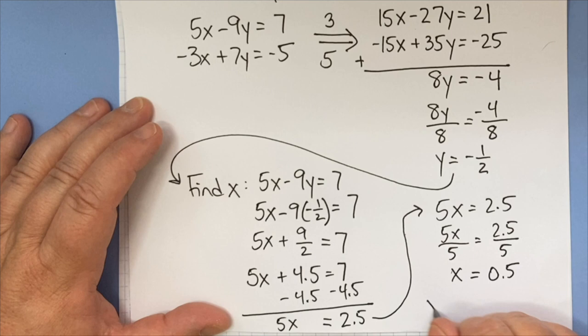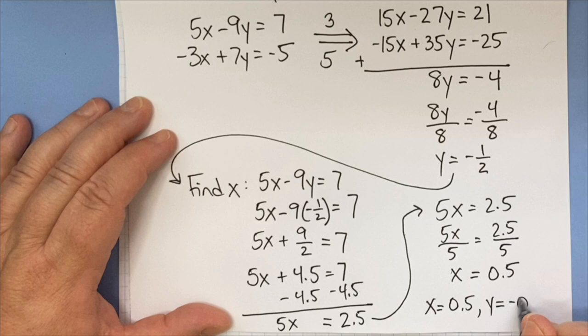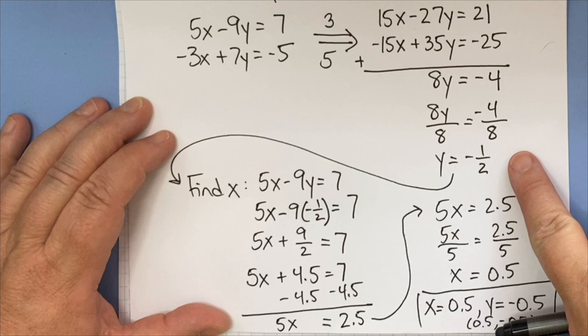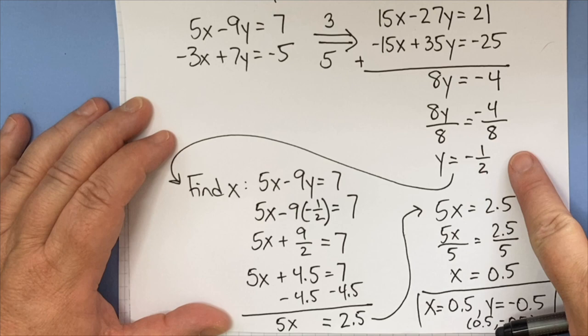So my answer is x equals 0.5, y equals negative 0.5, or 0.5, negative 0.5, depending. Notice what I did here, though. In giving my answer, even though my initial y value is a fraction, if I'm converting to writing as decimals, you should give everything as a decimal. Or if you're going to write it as a fraction, do everything as a fraction. Just be consistent.